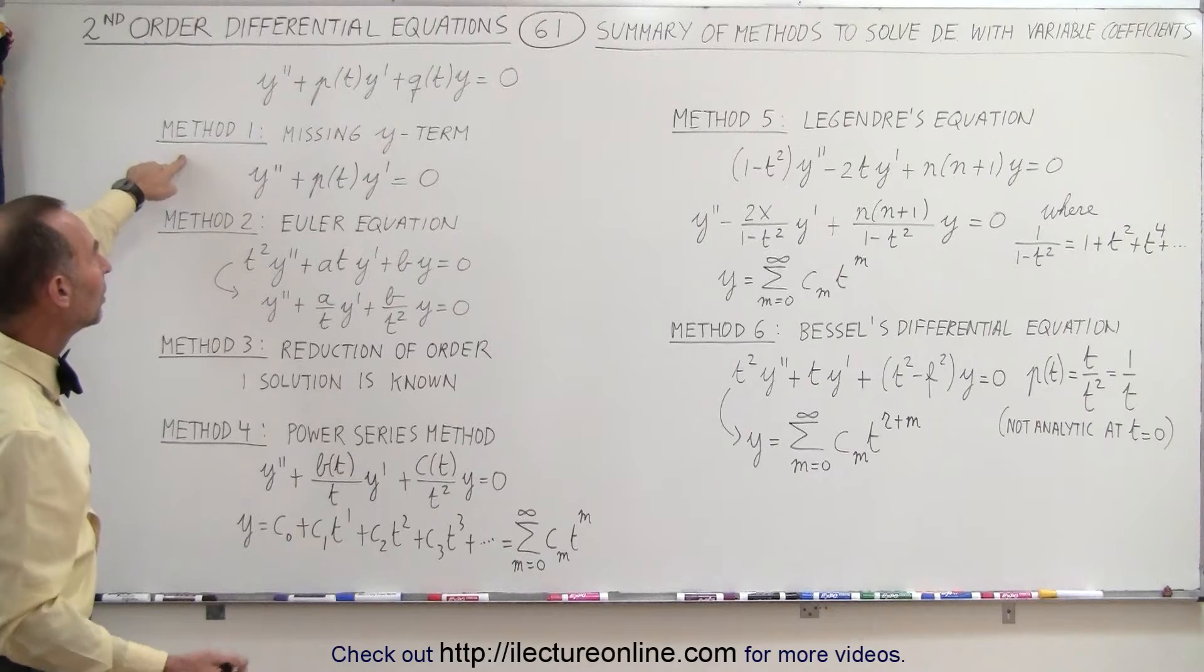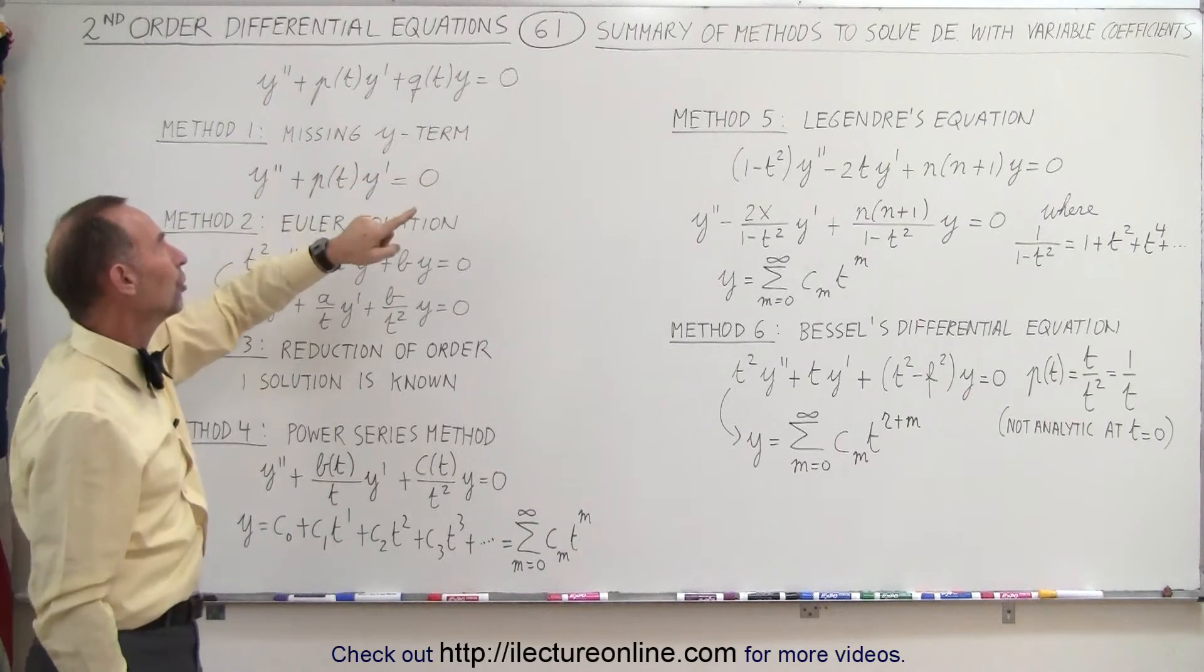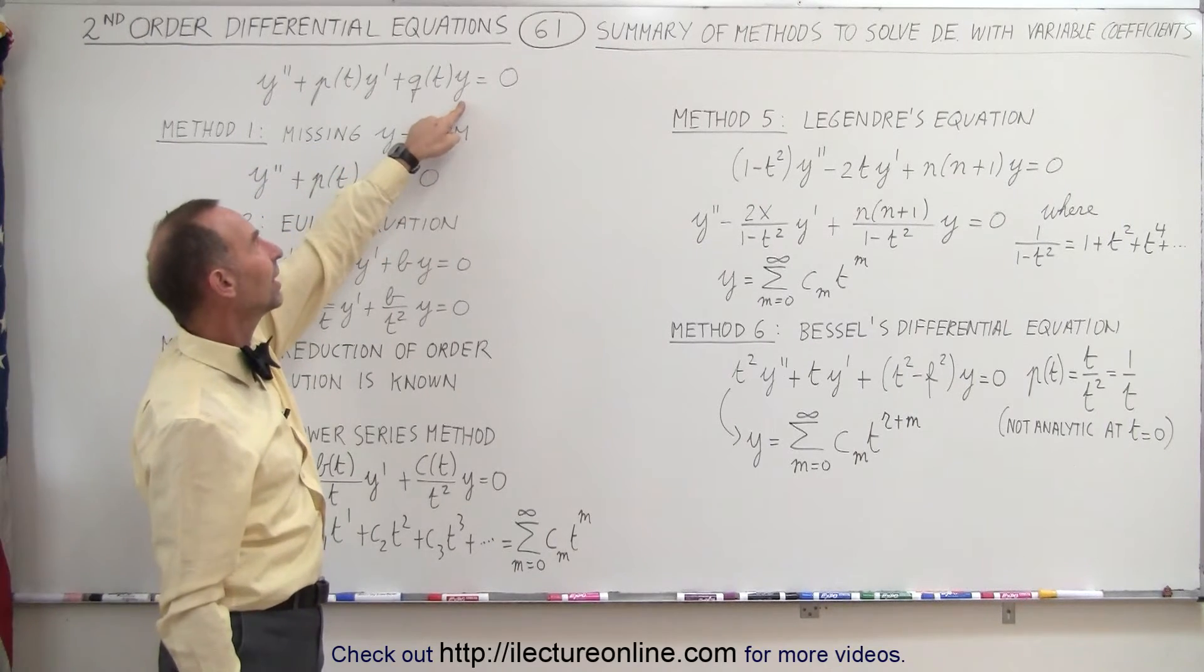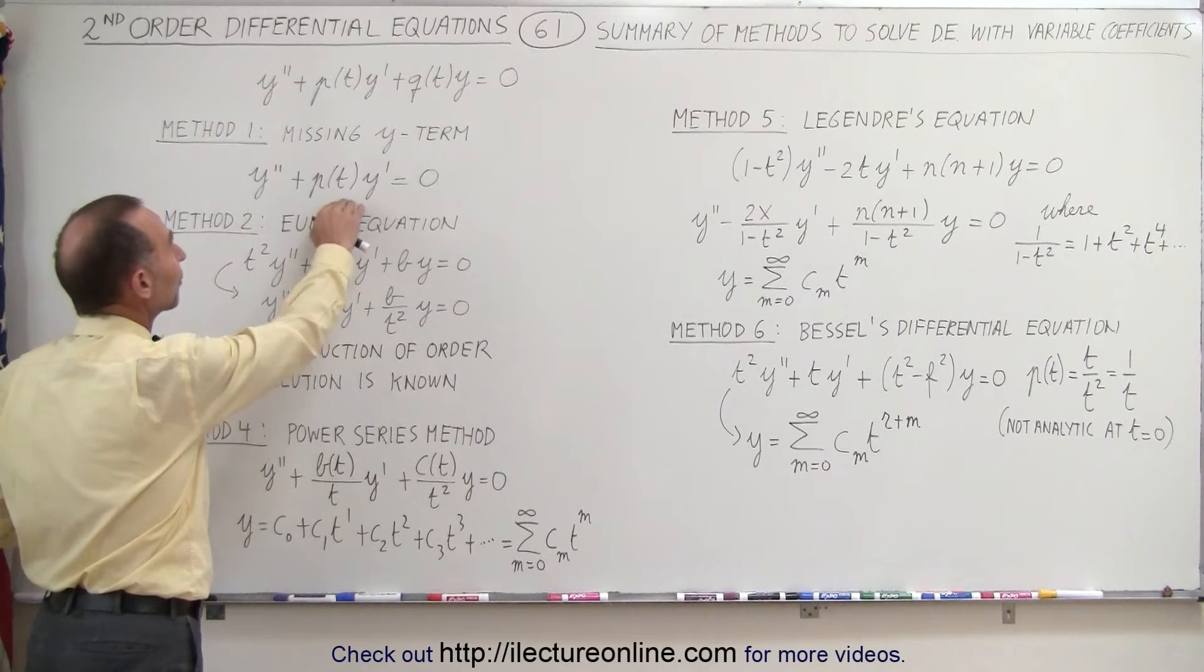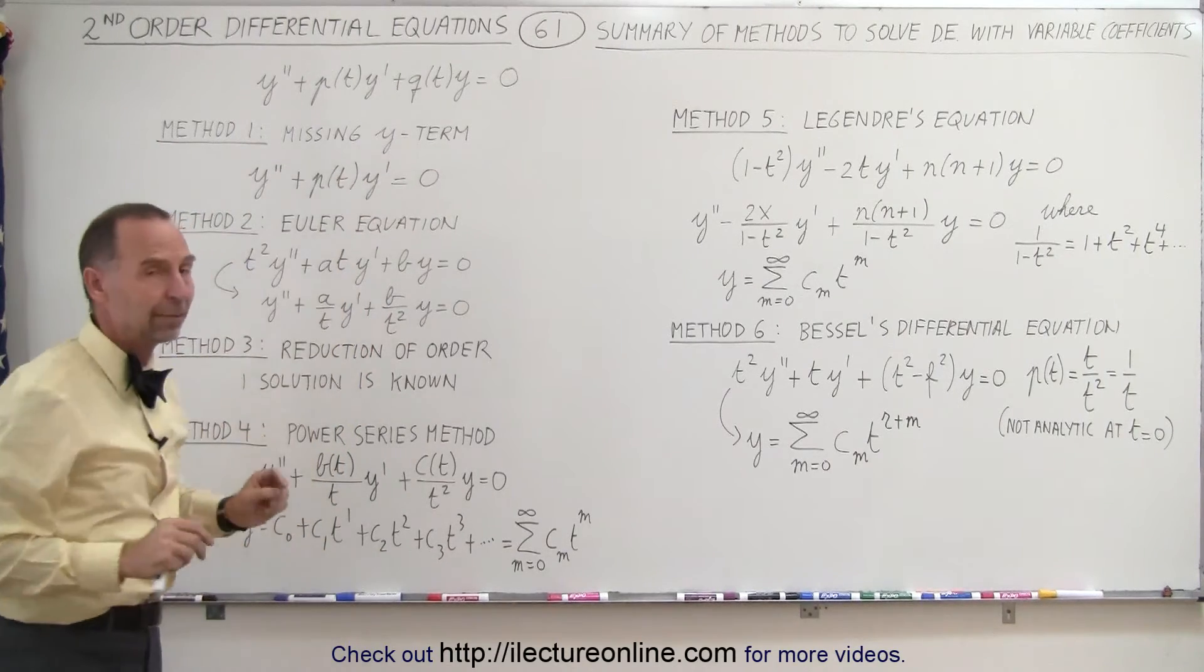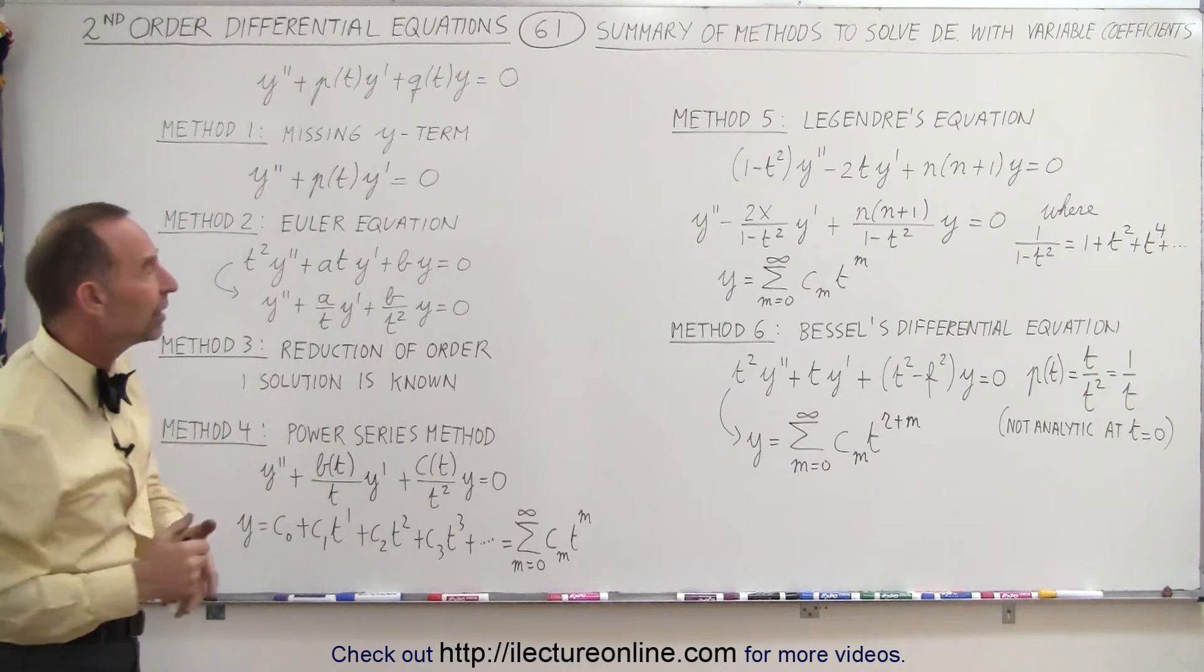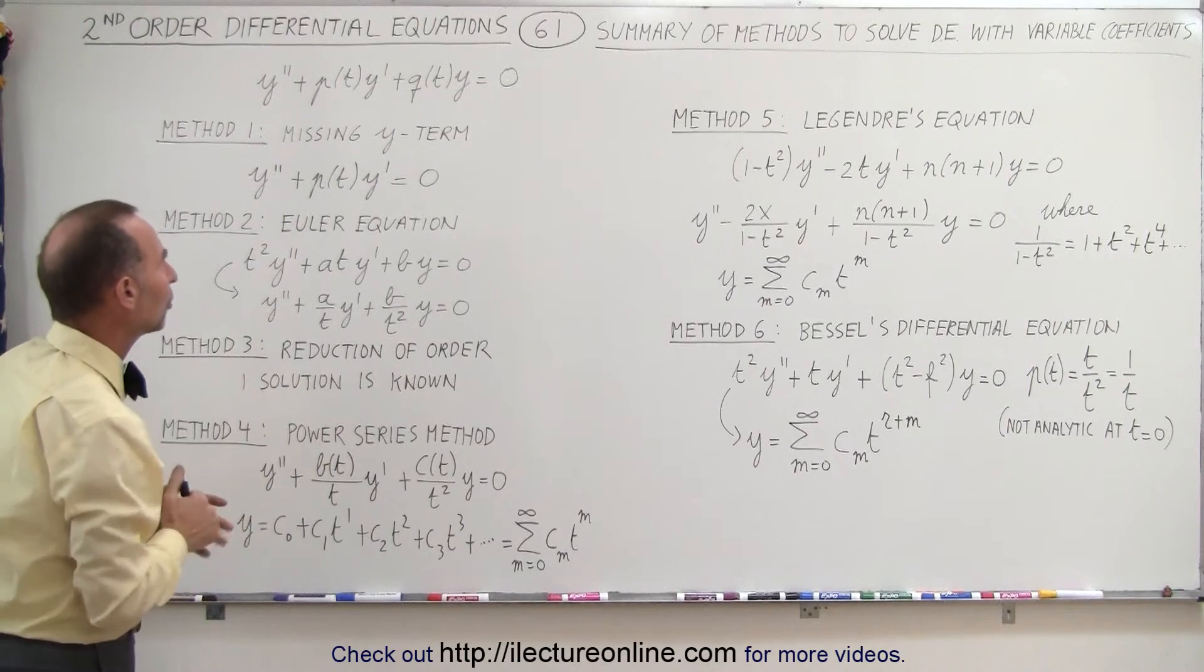So we have method one called the missing y term. If the y term is missing, then it's not that difficult to solve for the homogeneous part of the equation. And we'll show you how to do that. Matter of fact, I think we already showed you at least one example of that, but we'll get into it a little bit more.